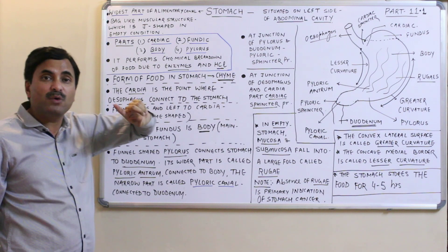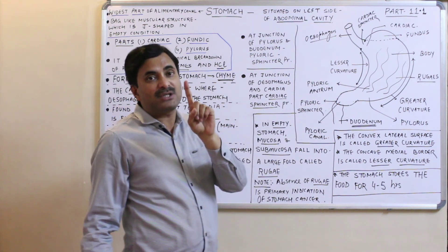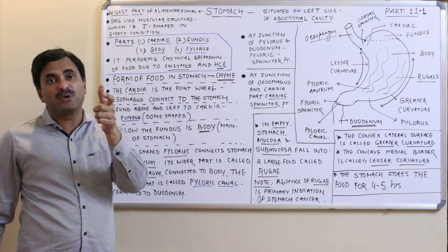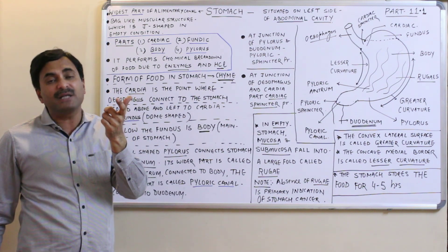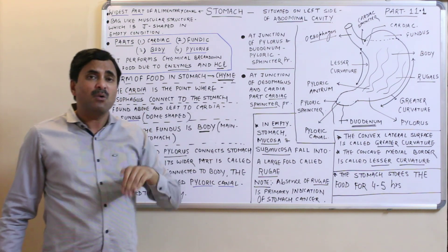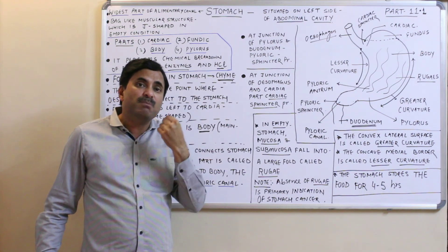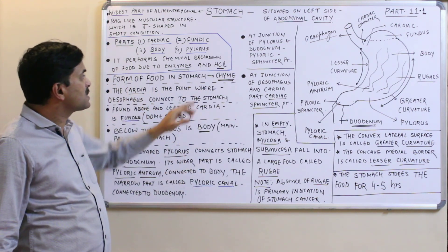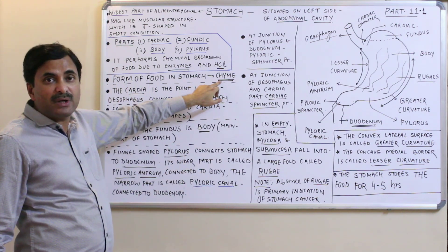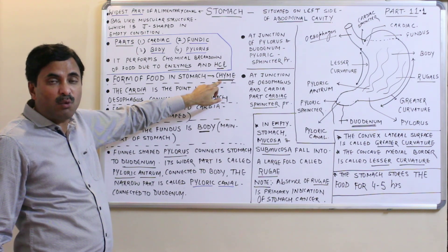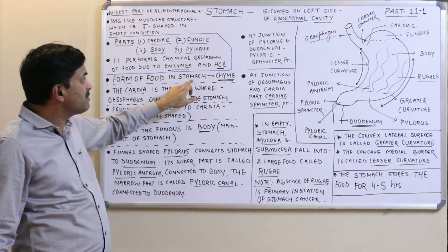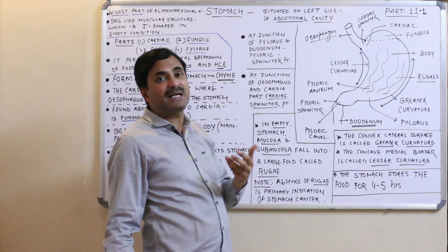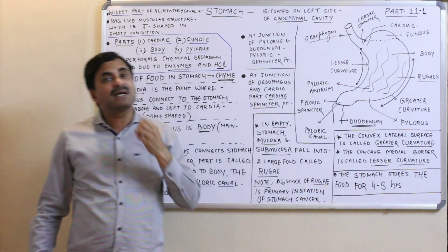The form of food in the stomach is chyme. First, digestion occurs in the buccal cavity, and the partially crushed food mixed with saliva is known as bolus. The food is digested further in the stomach, and then the form of food is called chyme. In the intestine, the form of food is also called chyme.